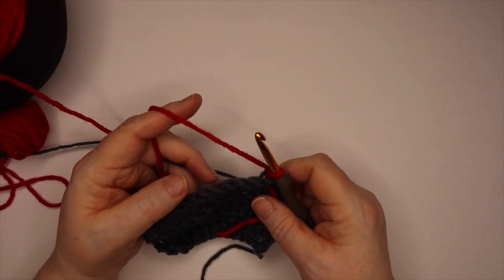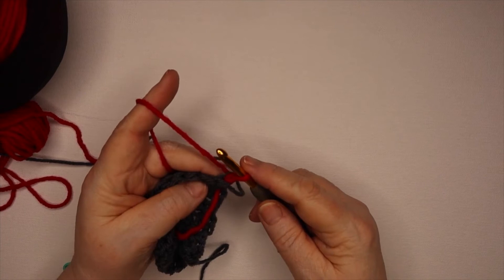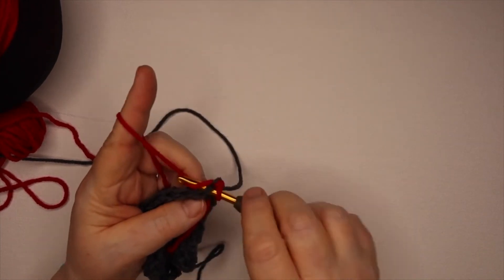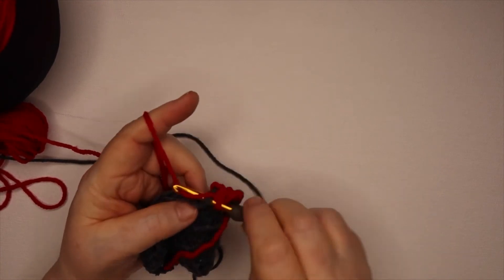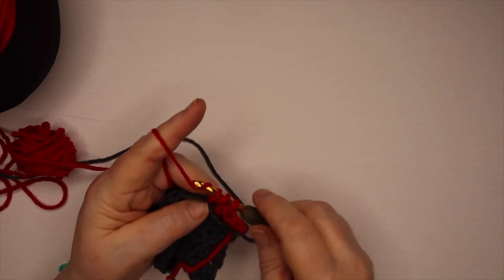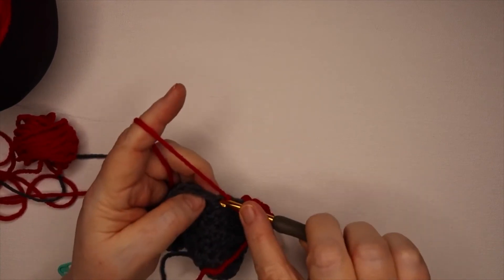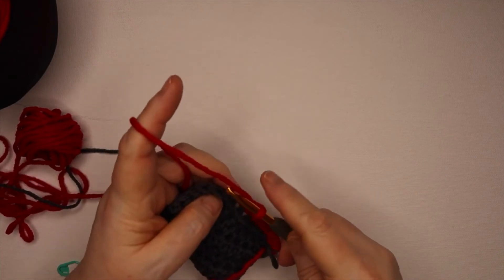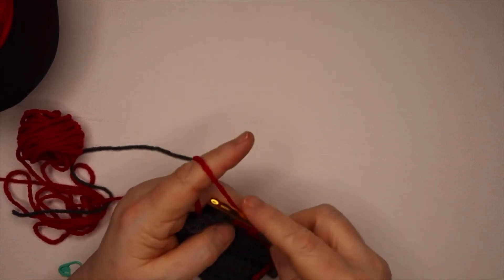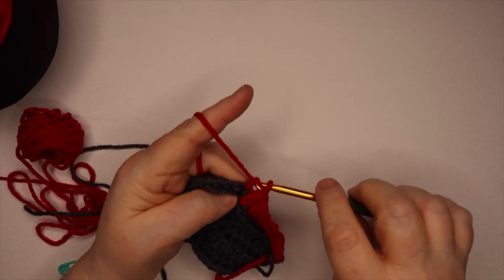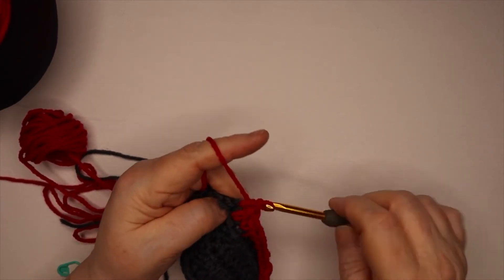Now seed stitch is just simply single crochet in one, double crochet in the next. Since I have started with the chain one, I'm going to put a single crochet into this first stitch, then a double, then single, then double, single, double, single, double. Ignore the phone.